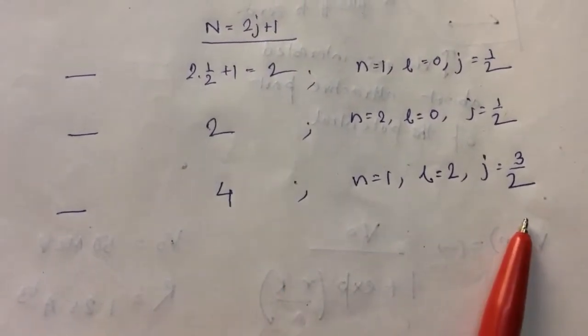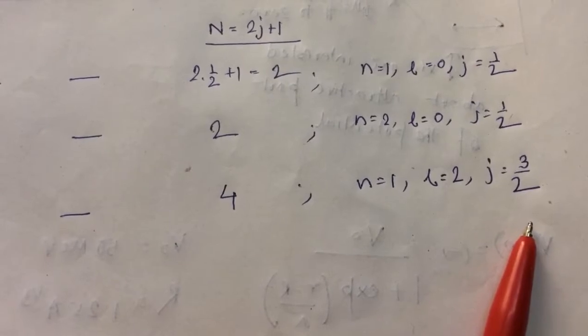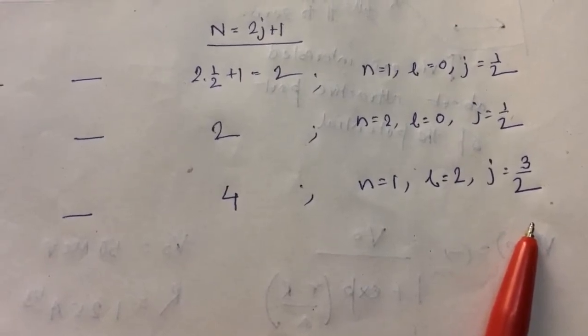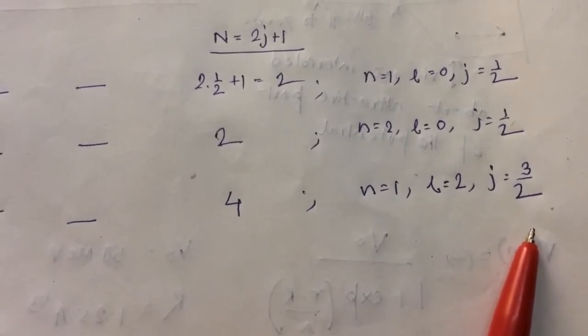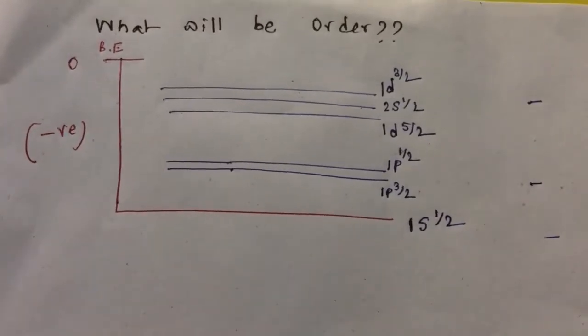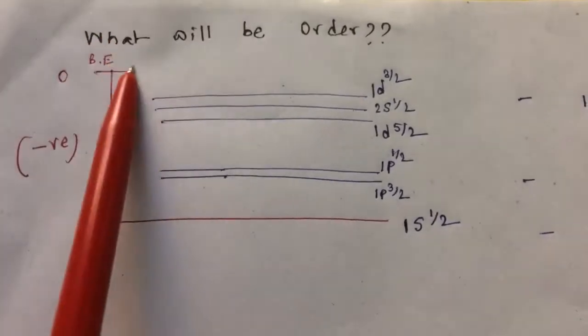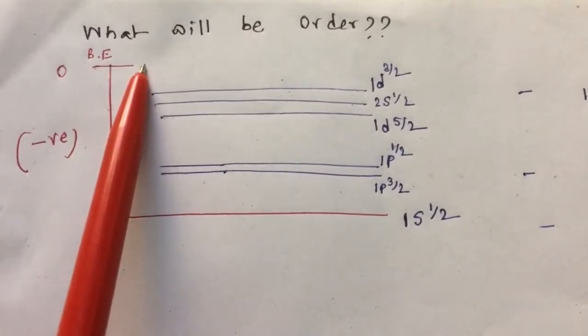We are getting very important information about the states of neutrons and protons. Then how to generate these states? Suppose this is the binding energy. This is the zero value of the binding energy.